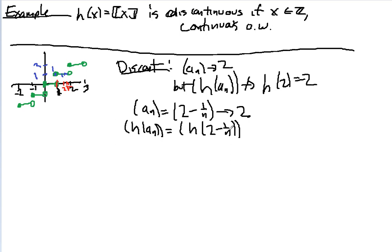So these are all strictly less than 2. So the greatest integer that's less than or equal to it is going to be 1. So this is just going to be a sequence of 1s, which is going to converge to 1, which most importantly is not equal to h of 2. So it's not continuous at 2. And that's the basic idea behind any of the integer values.